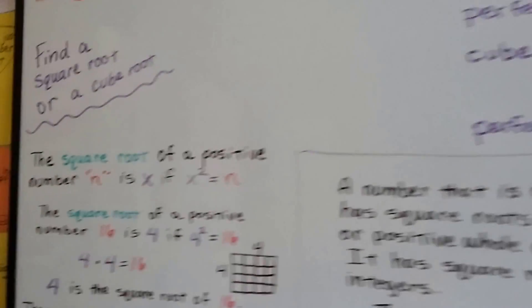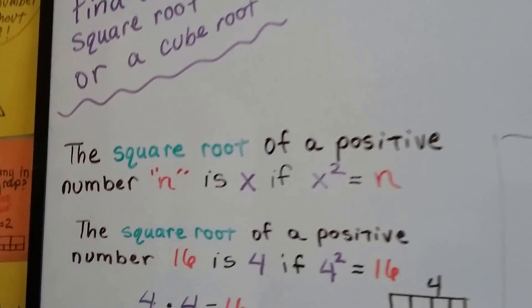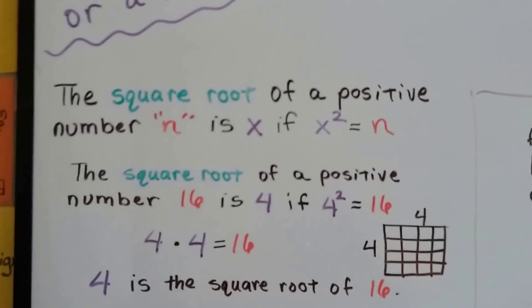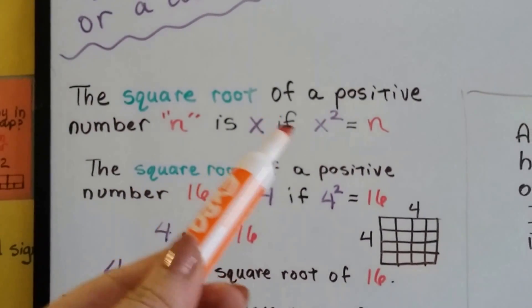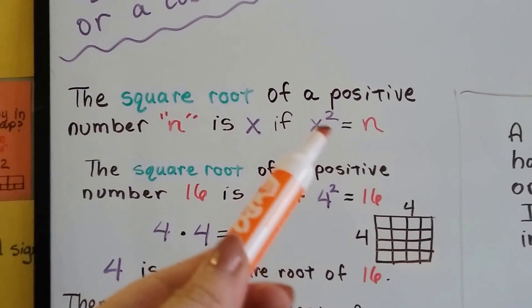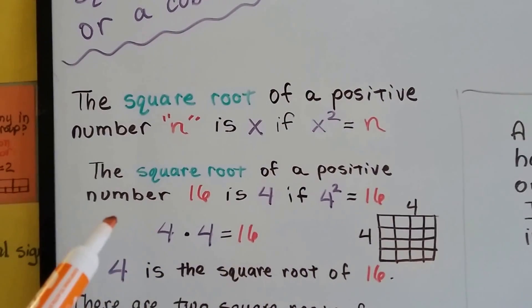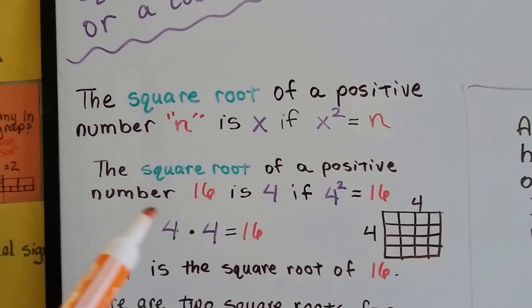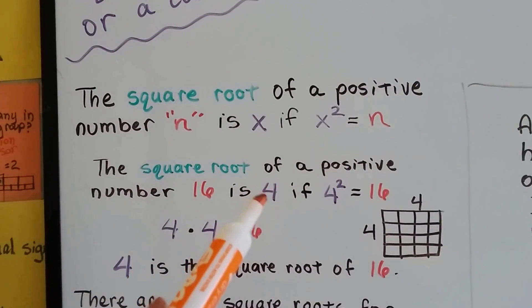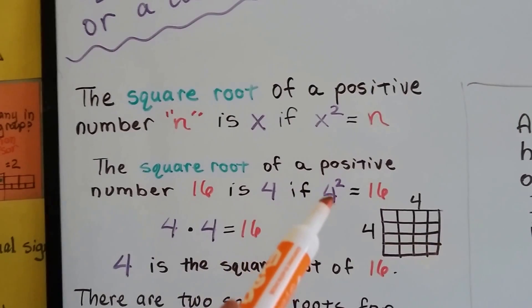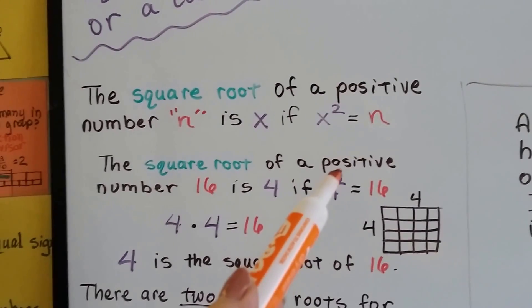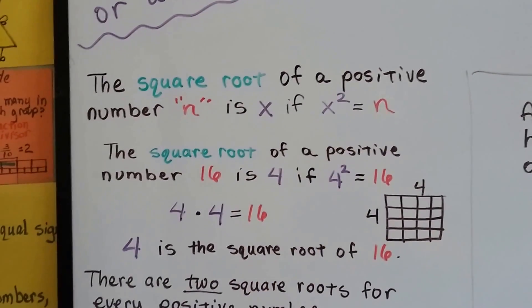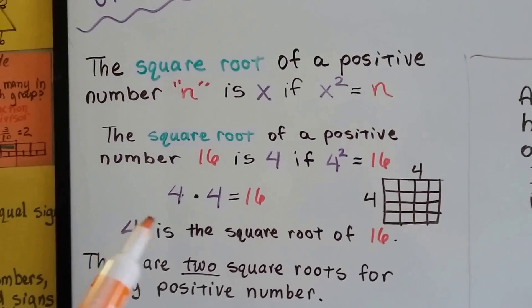Let's talk about square roots. The square root of a positive number n would be x, if x squared equals that number. What that means is, the square root of a positive number, like 16, would be 4, if 4 to the second power — 4 squared — equaled 16. 4 times 4 equals 16.